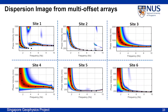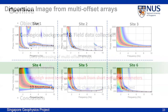After transforming from the time-space domain into the frequency-velocity domain and applying azimuth correction, we can get the dispersion maps of the surface wave. By picking up the maximum energy, we can get the dispersion curve of the multi-channel array. These dispersion curves can then be used in 1D inversion of multi-channel arrays at particular sites.